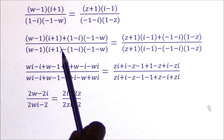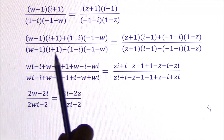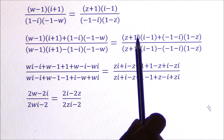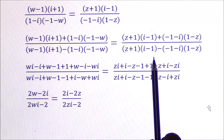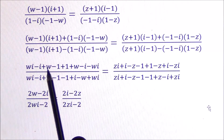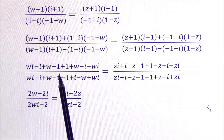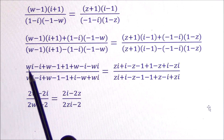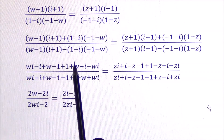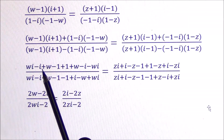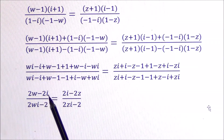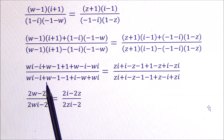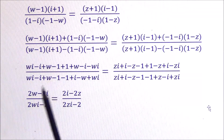We simplify using the componendo-dividendo method: applying (numerator + denominator) / (numerator - denominator) to both sides. On the left-hand side, simplifying gives: Wi - Wi cancels, W + W gives 2W, -i - i gives -2i. In the denominator, Wi + Wi = 2Wi, and -1 - 1 = -2, with other terms cancelling.